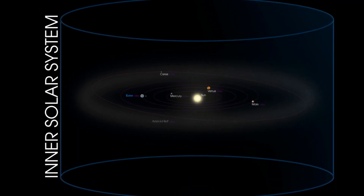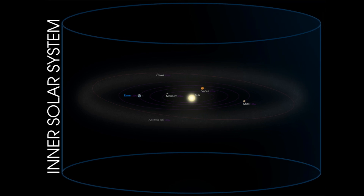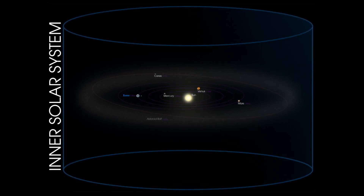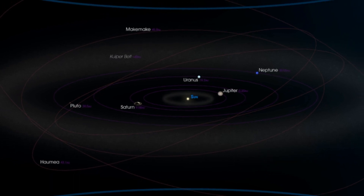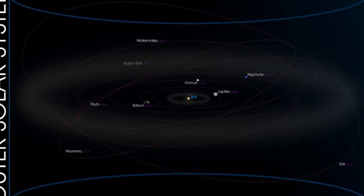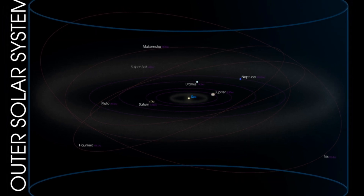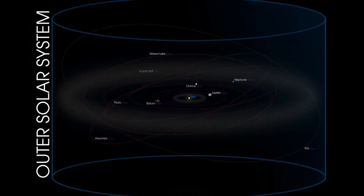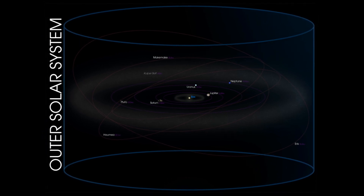The inner solar system contains the sun, the planets Mercury, Venus, Earth, and Mars, and the asteroid belt. The outer solar system is home to the gas giants Jupiter, Saturn, Uranus, and Neptune. In the outer reaches of the solar system, we find dwarf planets such as Pluto, as well as leftover matter from the creation of the system in the Kuiper Belt and Oort Cloud.